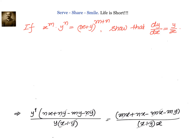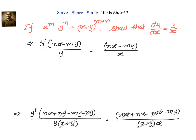Let us simplify this. Expanding the numerators: on the left we have n·x plus n·y minus m·y minus n·y, and on the right we have m·n·x plus n·x minus m·x minus m·y. We can cancel n·y and n·y, cancel m·x and m·x, and cancel x plus y on both sides. That gives y dash times n·x minus m·y divided by y, is equals to n·x minus m·y divided by x. Now we can cancel n·x minus m·y on both sides, and in the last step we get y dash equals y by x, or dy by dx is equals to y by x.